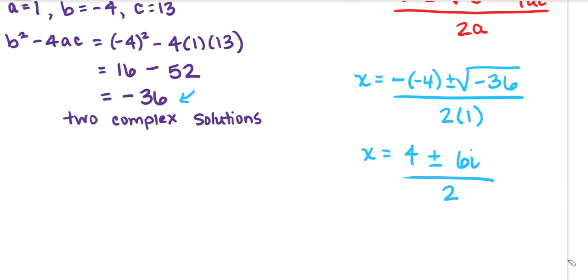Now notice there that there is a common factor in the numerator. So we can factor 2 goes into both 4 and into 6. So we can reduce this fraction. So notice that the coefficients there, 4 and 6, are both divisible by 2 and so is the denominator.